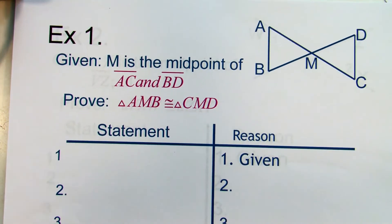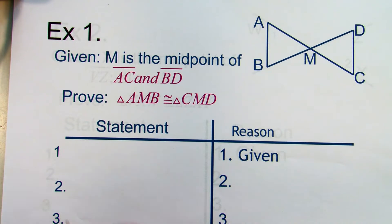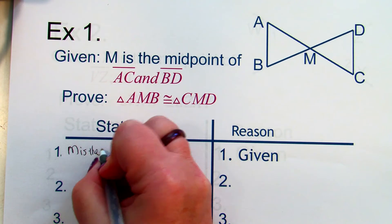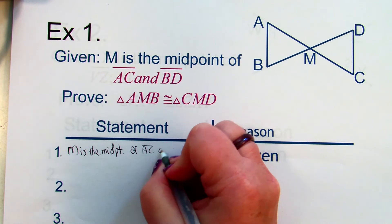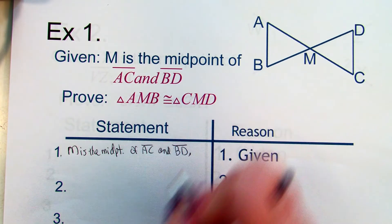Number one: given M is the midpoint of segment AC and segment BD. We haven't really talked about midpoint — it means it's the middle of the segment, that it divides the segment into two congruent segments. So let's write that M is the midpoint of AC and BD, and we'll take it one given at a time.